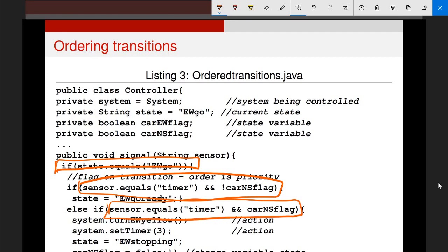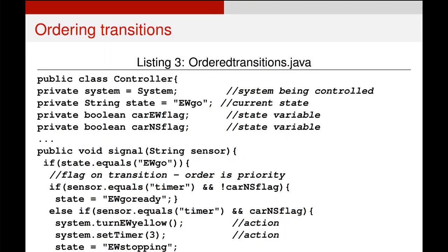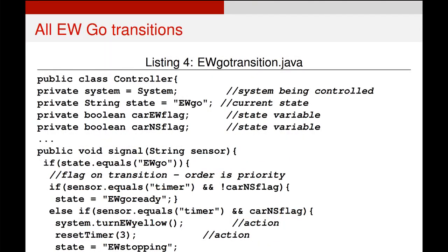However, if you look carefully at the previous diagram, there's still one more transition missing. And you can see it appear on the bottom of the next slide. We've added that self-transition to toggle the value of the car north-south flag there.